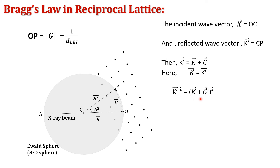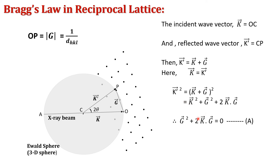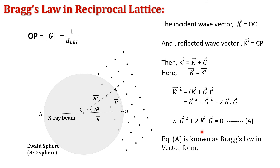Squaring gives k'² = (k + G)², which expands to k² + G² + 2k·G. Since |k'| = |k|, the k² terms cancel on both sides, leaving G² + 2k·G = 0. This equation represents Bragg's law in vector form in the reciprocal lattice.